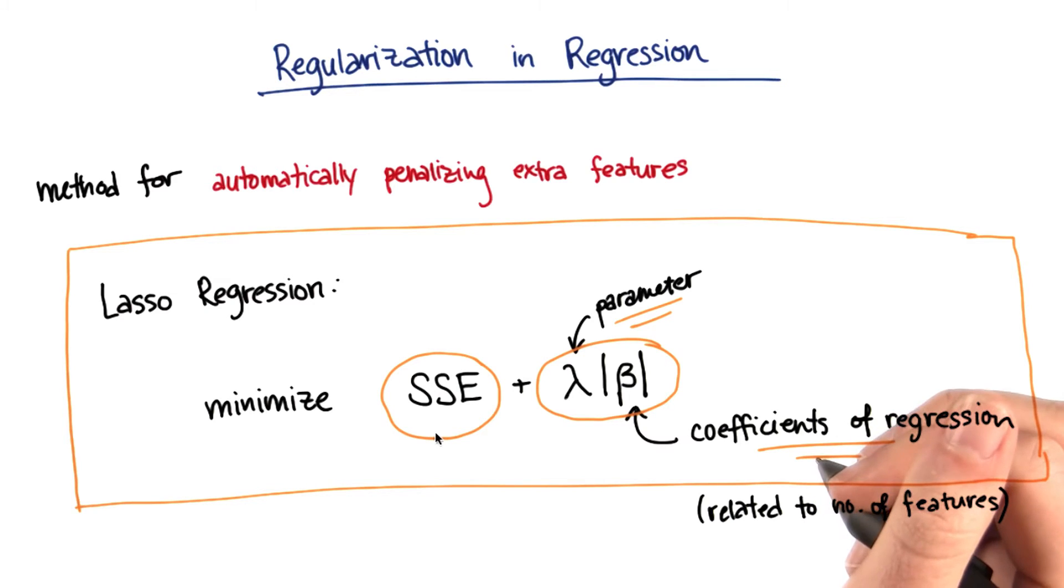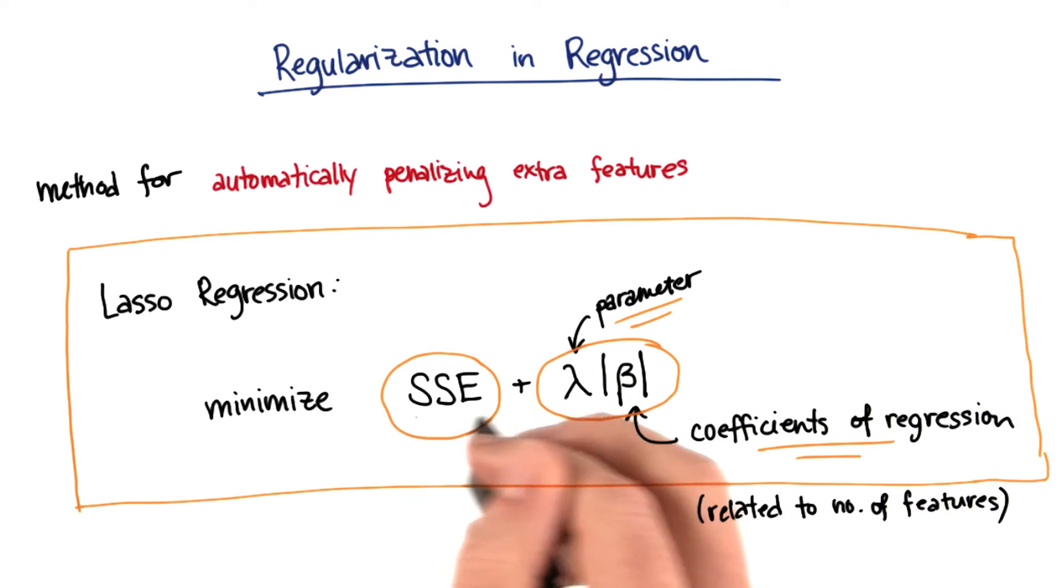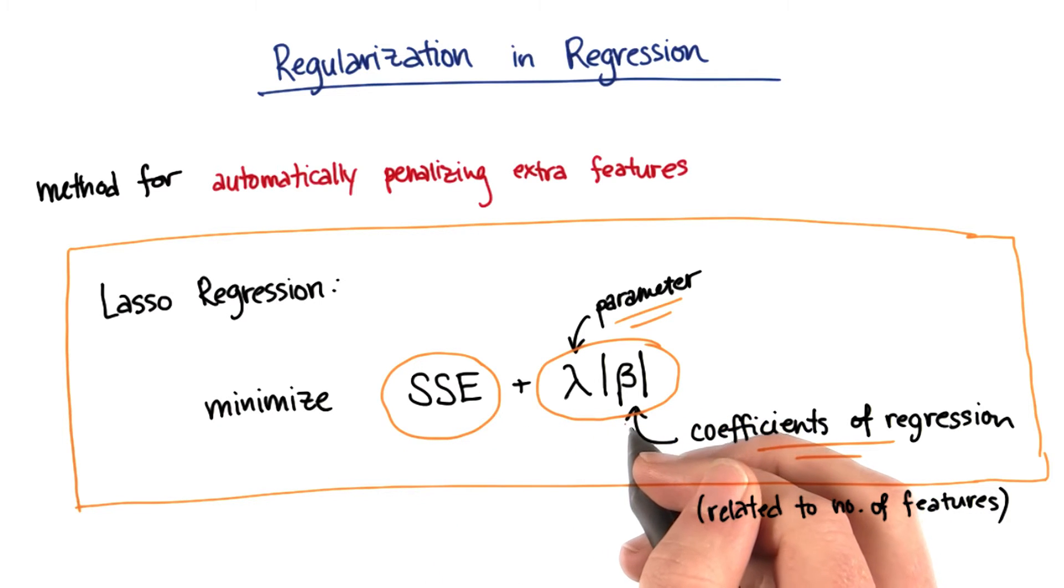Here's the result of this formulation. When I'm performing my fit, I'm considering both the errors that come from that fit and also the number of features that are being used.